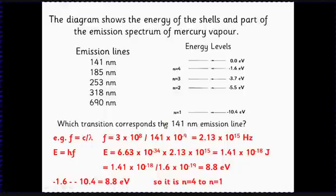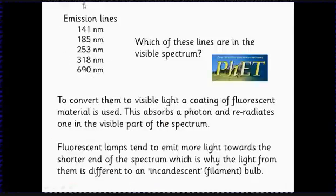What you might notice here is that all of these lines, apart from the bottom one, are in the ultraviolet or less than 400 nanometers. So all of these are ultraviolet lines, which clearly isn't going to be much used for a light. So what we need to understand in a minute is how we're going to convert those. But first of all, we'll just have a look at this little animation to hopefully make that a little bit clearer.